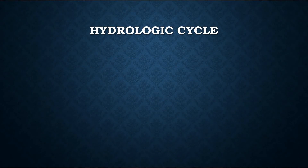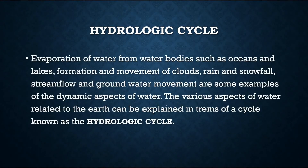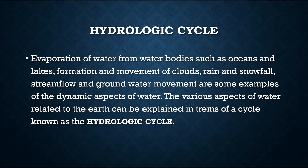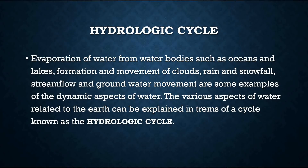What is meant by the hydrological cycle? Evaporation of water from water bodies such as oceans and lakes, formation and movement of clouds, rain and snowfall, stream flow and groundwater movement are some examples of the dynamic aspects of water. The various aspects of water related to the earth can be explained in terms of a cycle known as the hydrologic cycle.